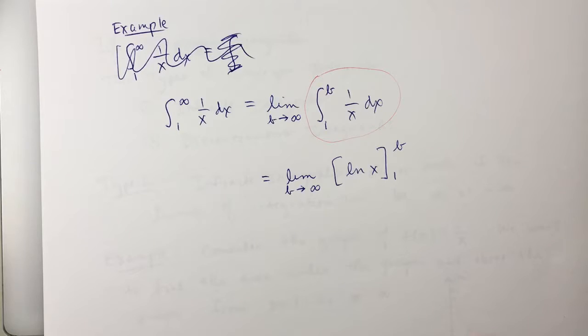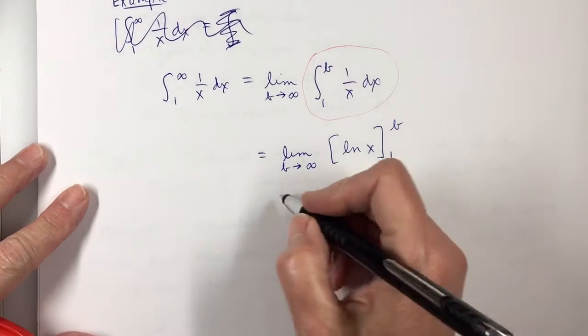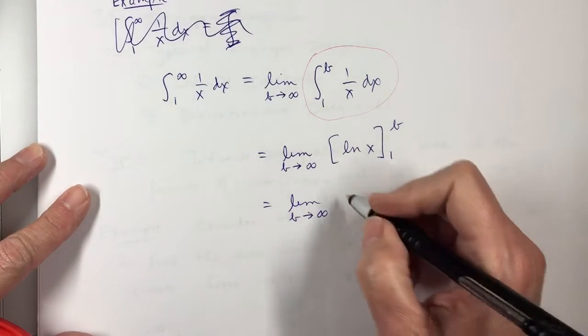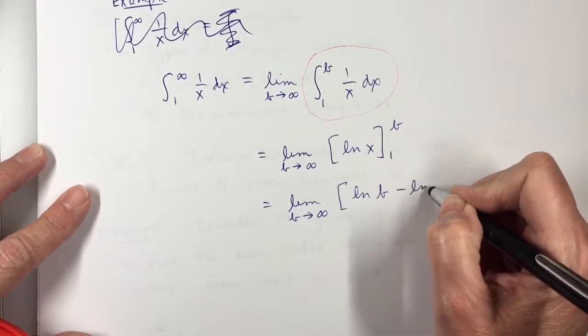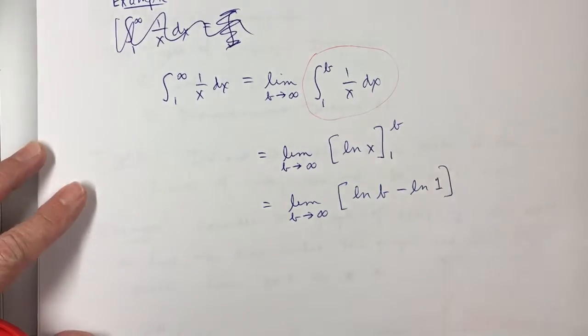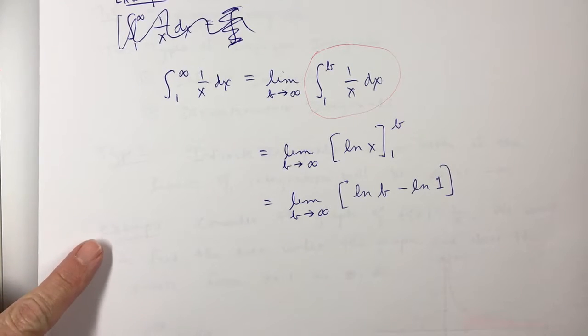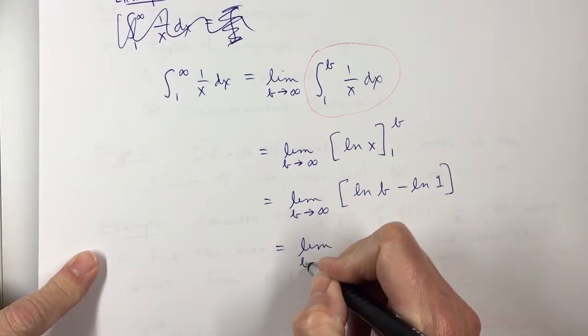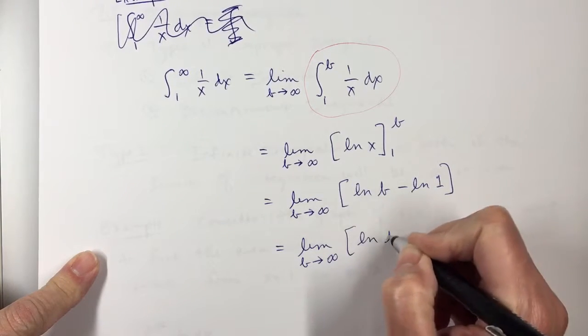So, we'll plug in the B, and then we'll plug in the 1, and we'll subtract the two. So, the limit as B approaches infinity of the natural log of B minus the natural log of 1. The natural log of 1 is 0, so this becomes the limit as B approaches infinity of the natural log of B.